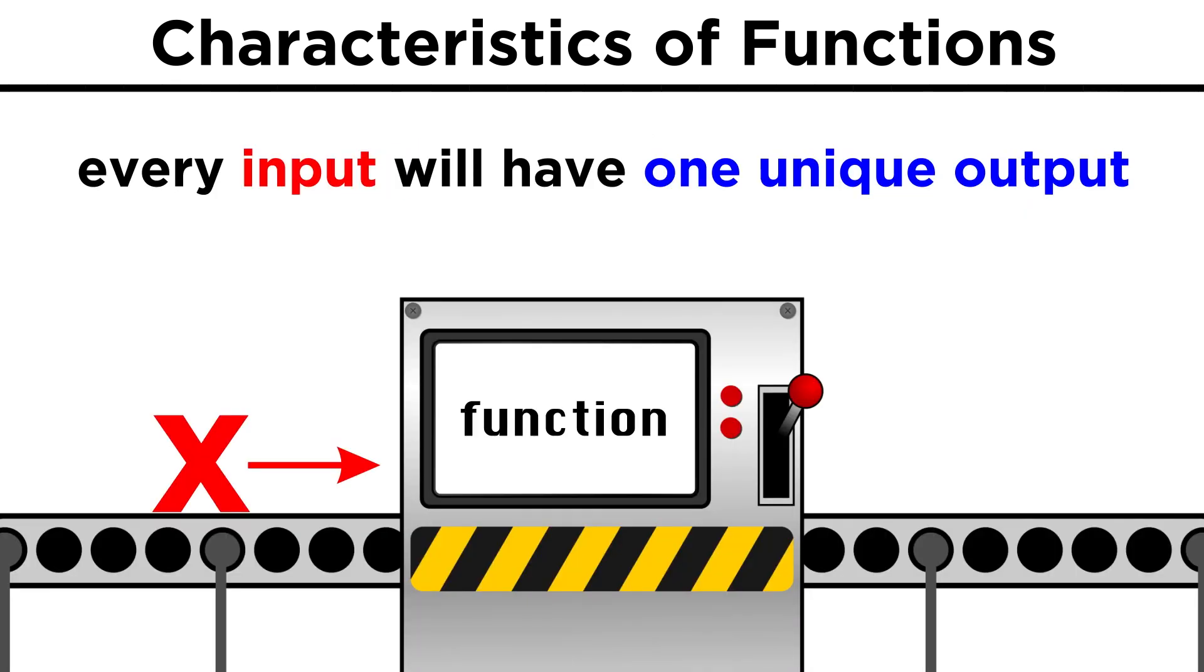The only difference is that with functions, for any x value we plug in, there must only be one y value. For example, if a function tells us the sale price of an item, if we plug in the regular price, we should get only one sale price.